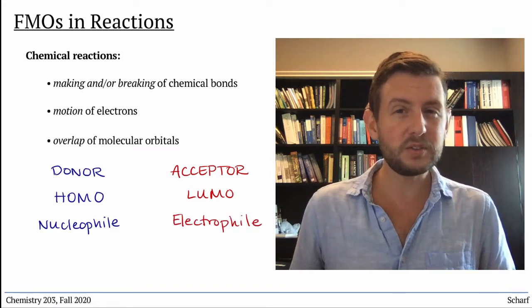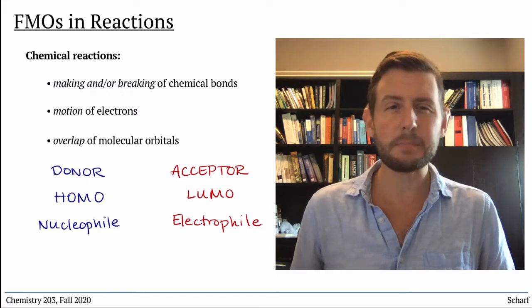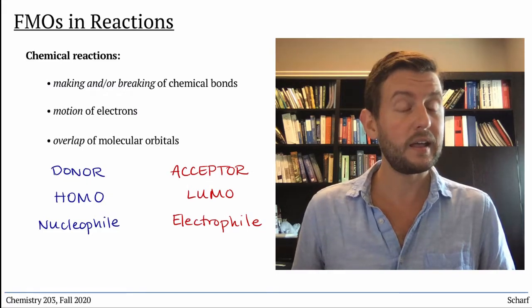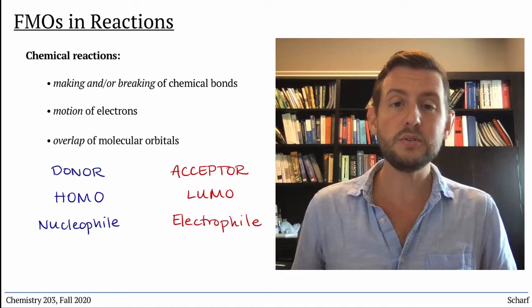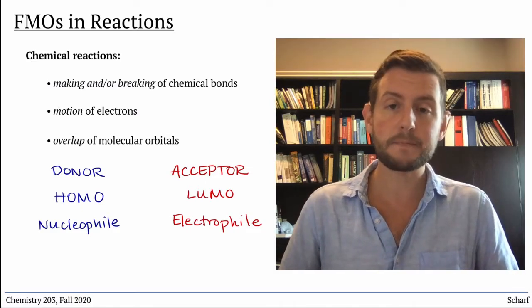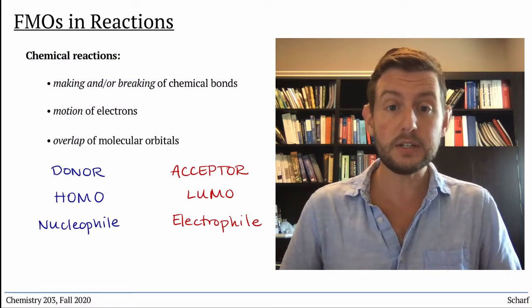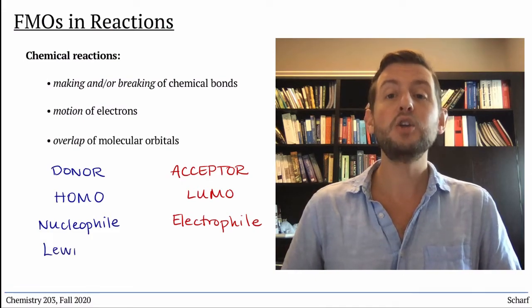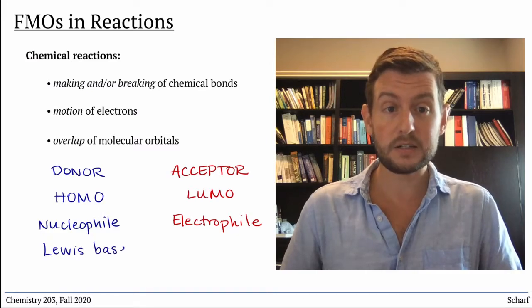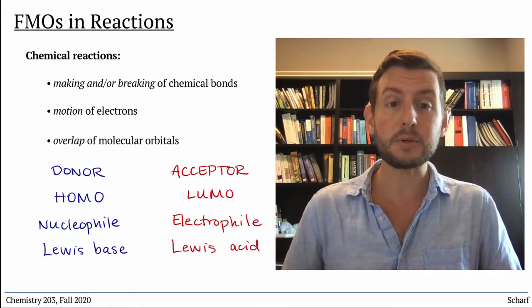Do you remember where else you've learned about donors and acceptors of electrons? In Chem 202, you learned about acids and bases. One of the definitions of acids and bases is the Lewis definition, in which bases are donors of electron pairs, and acids are acceptors of electron pairs.